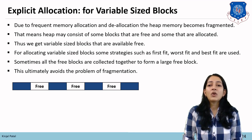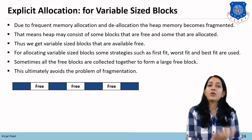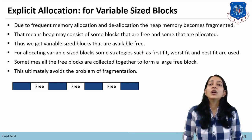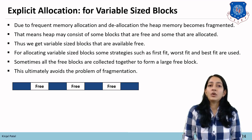Here you can see an example of a variable-size block: there can be a block that is allocated, and after that allocated block there can be one block which is free. To allocate the variable-size block memory, explicit allocation is used.